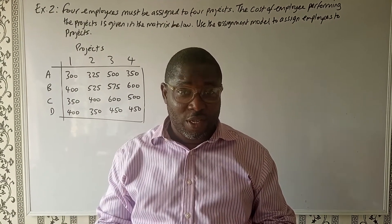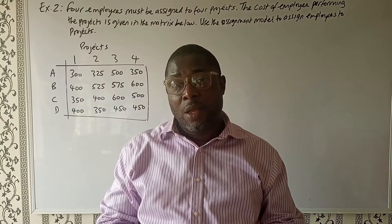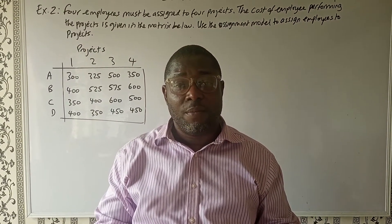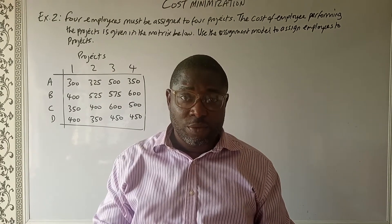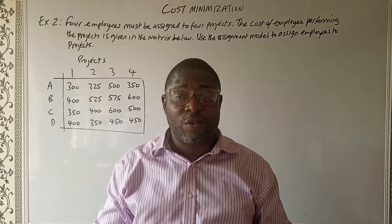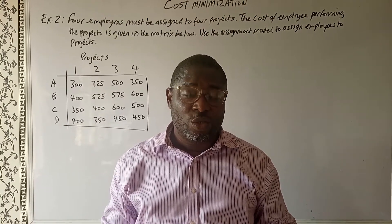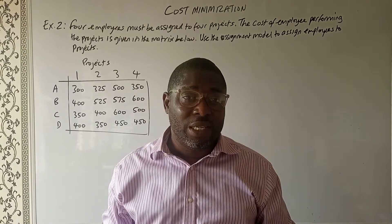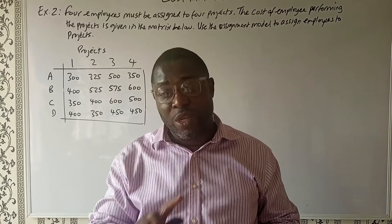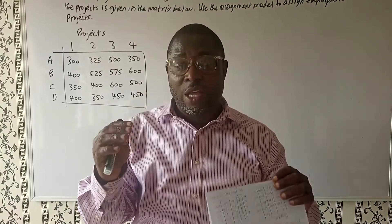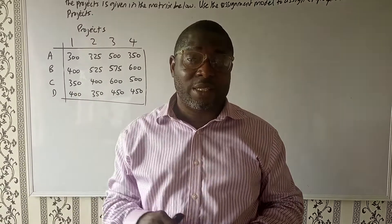Thank you very much for joining me once again for another lecture series dealing with the assignment problem. In today's lecture, we'll work through an example performing row operation, then column operation, to check whether we have attained optimal assignment. If not, we may need to do further operation on our matrix. The whole idea is to achieve as many zeros as possible so that you can cover the zeros with lines and achieve the optimal assignment.